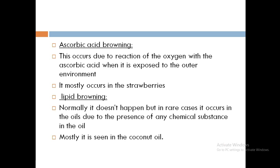The third type is ascorbic acid browning. When strawberries are cut into pieces and kept aside, they turn brown after some time. This is because the ascorbic acid reacts with the outer environment — specifically, oxygen reacts with the ascorbic acid present in the strawberry and the strawberry turns brown. This is called ascorbic acid browning. It mostly occurs in strawberries, though other fruits containing ascorbic acid can be affected too.